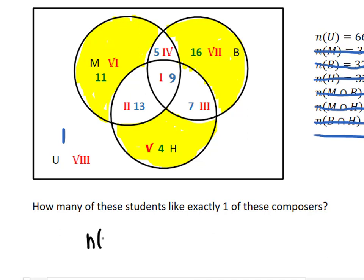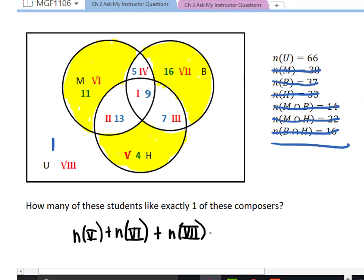So in fact, to answer this question, we have to take the number in region five plus the number in region six plus the number in region seven. That's going to be 4 plus 11 plus 16, that's going to be 31, 31 students who like exactly one composer.